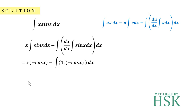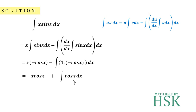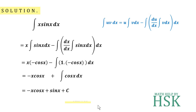This gives us minus x·cos(x). The minus and minus become plus, so we get plus integration of cos(x). Integration of cos(x) equals sin(x), so the final answer is: minus x·cos(x) + sin(x) + C.